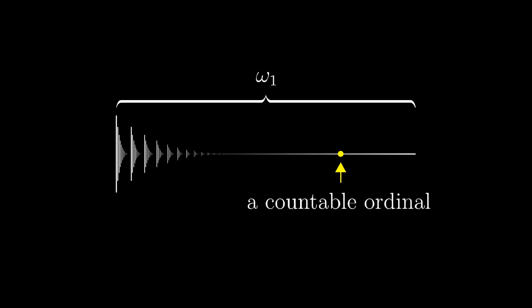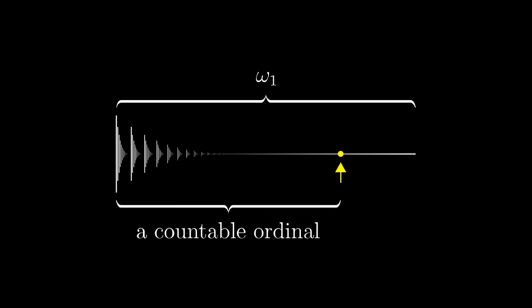Countable ordinals correspond to proper initial segments of omega one. So, omega one is strictly longer than all countable ordinals. On the other hand, omega one is an ordinal number, just not any of the countable ones. Therefore, omega one is uncountable.